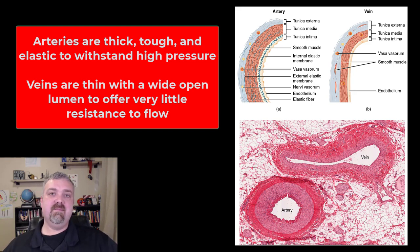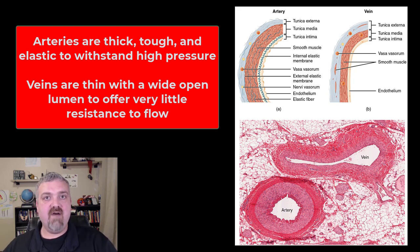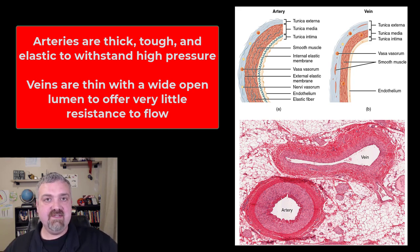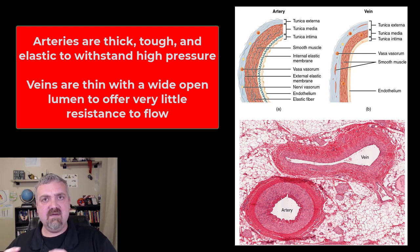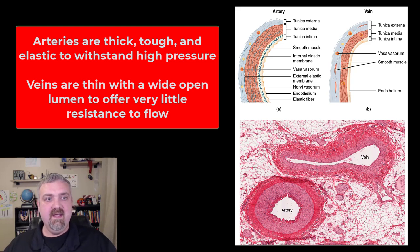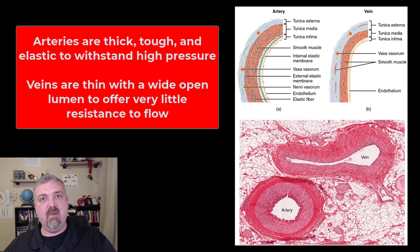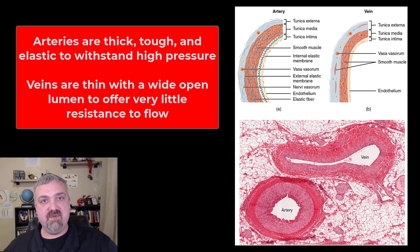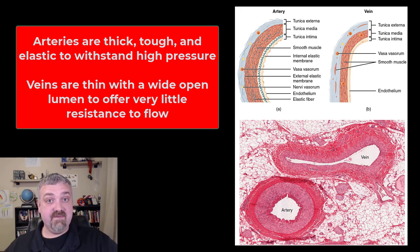Their job is to withstand the stretching without rupturing. Veins are the opposite — the pressure in the blood flowing through your veins is very low. So the vein's primary job is to offer very little resistance, or else the blood couldn't get back to your heart. Veins have a wide open lumen and are thinner. If you flipped the two around, blood couldn't flow back to your heart, and arteries would just pop and rupture. Their structure is different because their function is different.